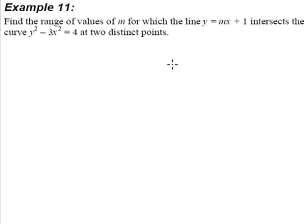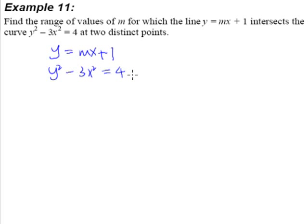First of all, we need to know how to find intersection points. In order to find intersection points of any 2 graphs, all we have to do is solve the simultaneous equations. We have two equations here — one of a straight line and the other one of an ellipse. We don't really have to bother with how the curve or line looks like. We can't possibly find x and y values because there are three unknowns but only two equations.